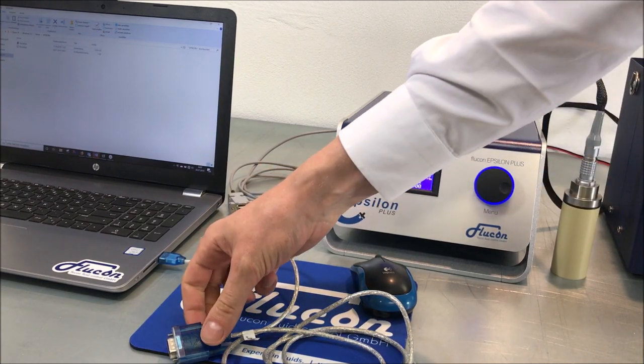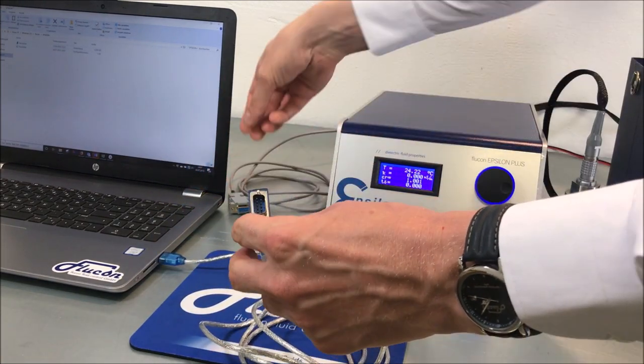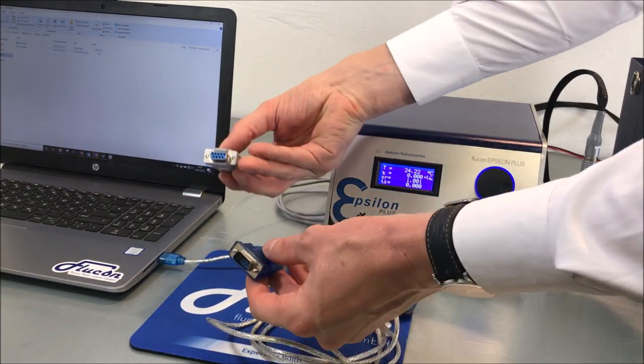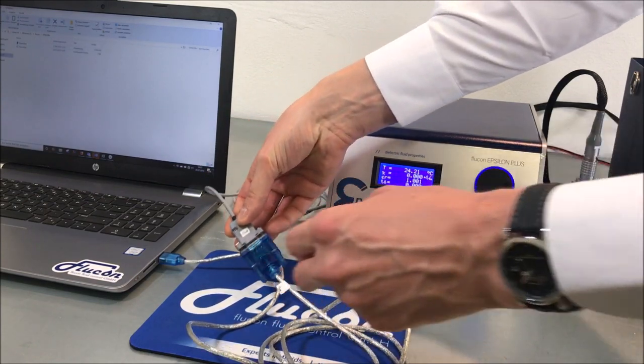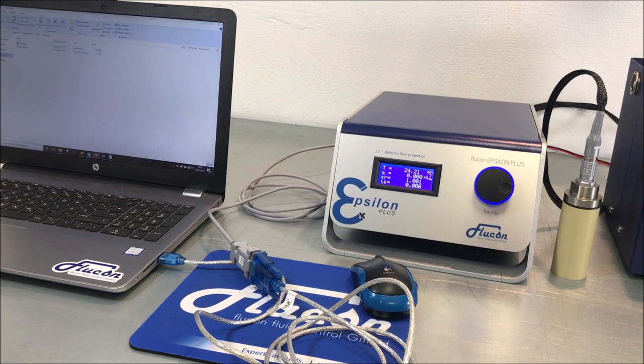You can check this by means of the device manager on your computer. Next, you connect the USB adapter to your PC cable. Now your Epsilon Plus Dielectricity Meter is connected to your computer and you are ready to prepare for measurement.